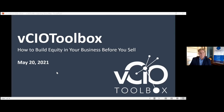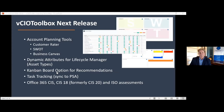Before we get started today, just want to bring you up to date on some housekeeping as it relates to VCIO Toolbox. We've got a release coming out in the first week of June. In that release, we've got a few new features — we're going to start adding our key strategy and account management module into the system. The first tools available are a customer rating tool, so we can look at criteria beyond just revenue and profits and get an idea of who those key customers are in our portfolio, and where there might be diamonds in the rough we should be spending more time with.